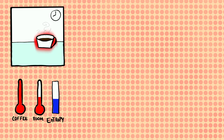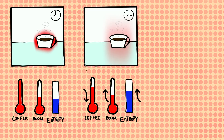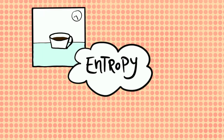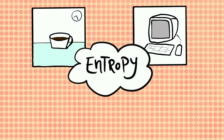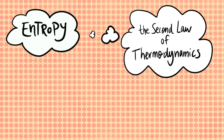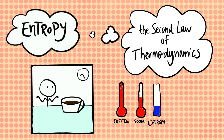Heat spontaneously flows from hotter to colder bodies and not the other way around. By doing so, temperature equilibrates and entropy increases. Entropy is a universal and profound concept that is central to understanding so many systems, from computers to living beings and even the entire universe. Entropy underlies a truly fundamental and general law of physics, the second law of thermodynamics, which states that entropy increases over time in isolated systems as they tend to equilibrate, much like the temperature of your coffee equilibrated with that of the room.